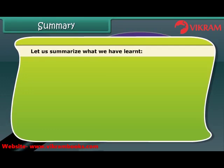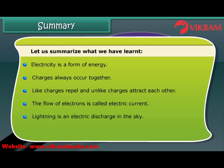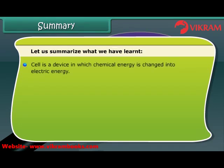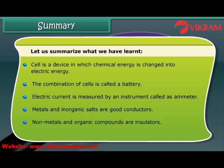Let us summarize what we have learnt. Electricity is a form of energy. Charges always occur together — like charges repel, and unlike charges attract each other. The flow of electrons is called electric current. Lightning is an electric discharge in the sky. Cells are sources of electric current; a cell is a device in which chemical energy is changed into electric energy. The combination of cells is called a battery. Electric current is measured by an instrument called an ammeter. Metals and inorganic salts are good conductors; non-metals and organic compounds are insulators.